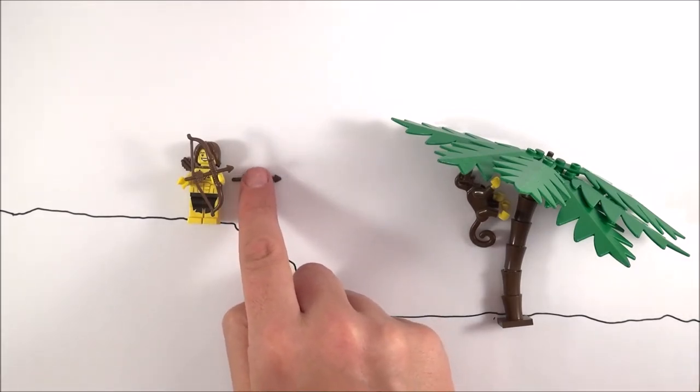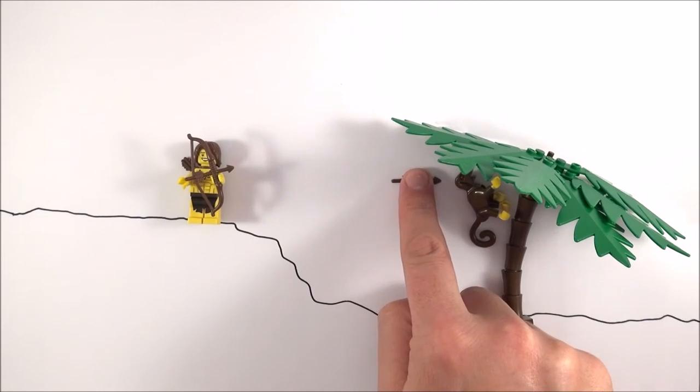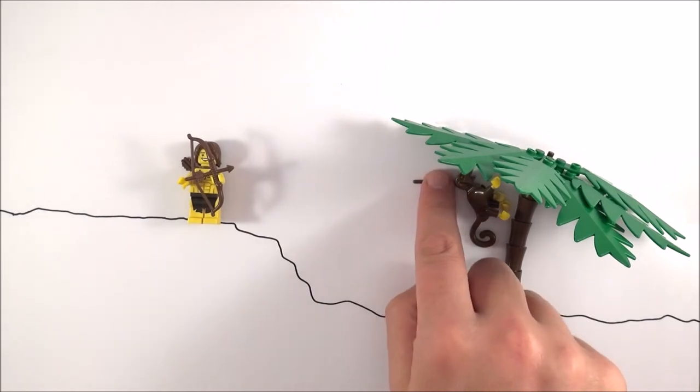In actual fact, the way that this arrow should be fired is completely horizontally, aiming at the monkey's head, in order to kill the monkey so he's got some dinner for him and his tribe later.